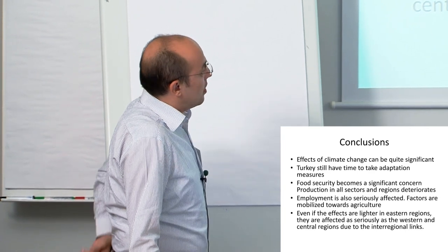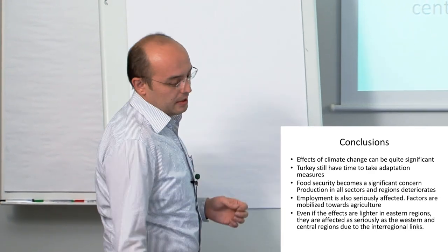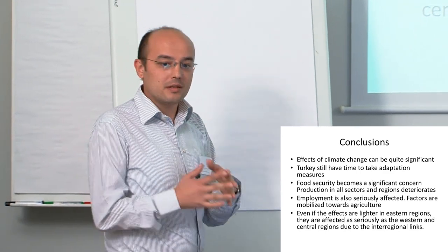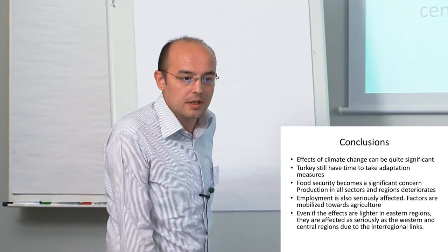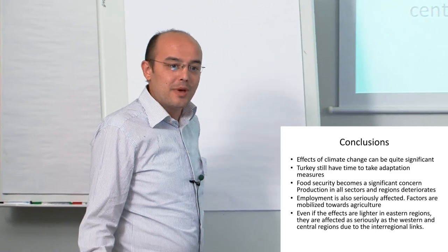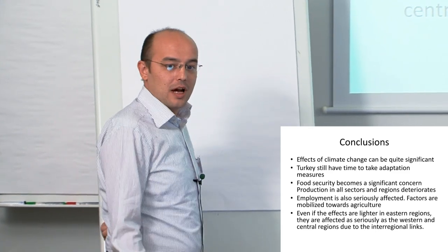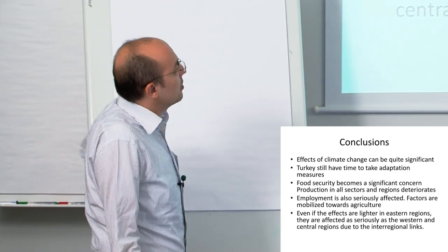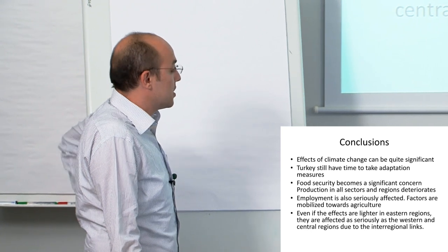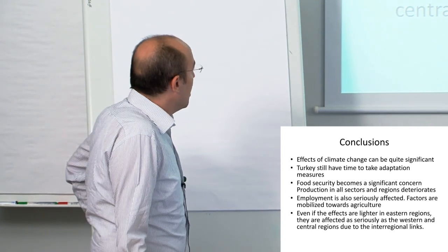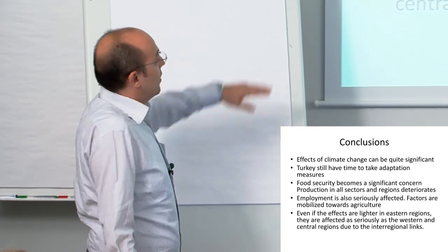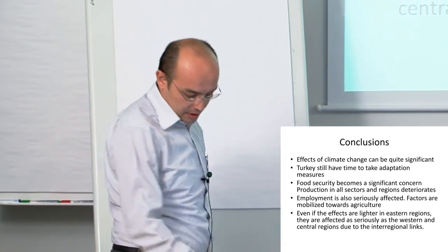Even though we don't have any sticky labor structure—labor can go to agriculture—I'm not sure if this is the case in real life. Once people come from rural to urban areas, they may not go back easily. We don't have that in the model, but the model expects them to go back. If this doesn't happen, that means more decline in agricultural production. Even if effects are lighter in eastern regions, they're affected as seriously as western regions because of regional links.